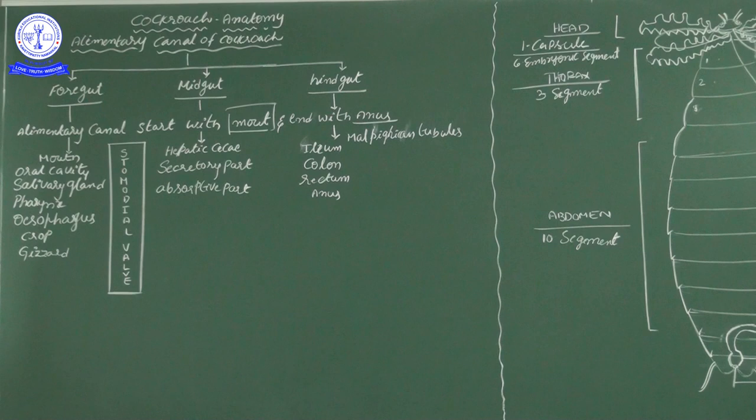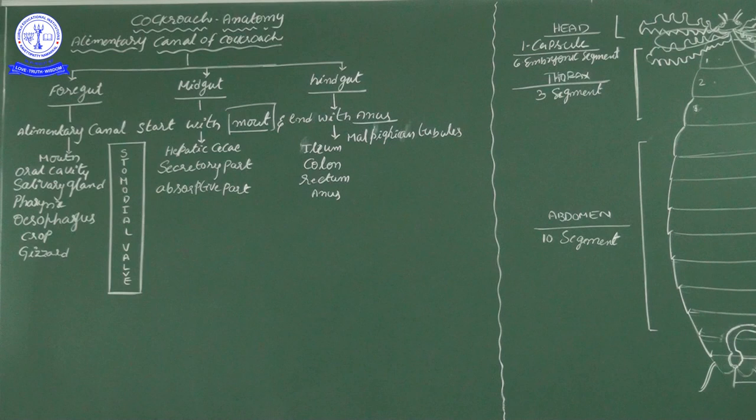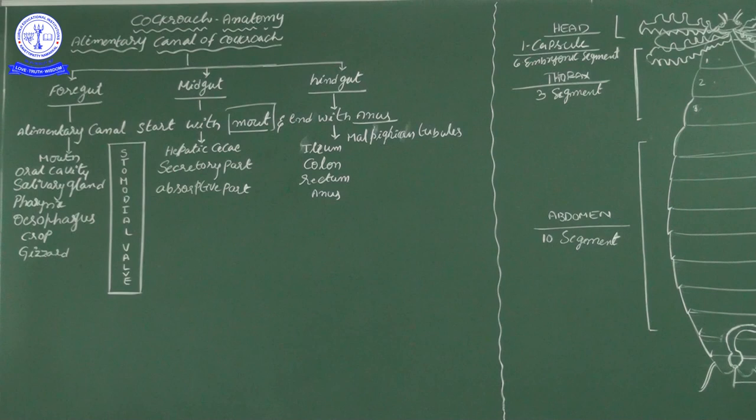How do we study physiology? Physiology means the functions that the anatomical organs perform — for example, the digestive system and its function, and the respiratory system and its function. In human physiology, we have seen both human anatomy and physiology. In this type study of cockroach anatomy, physiology is not covered — just the structure of cockroach.